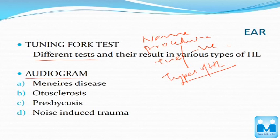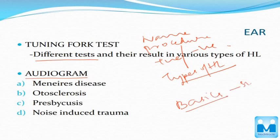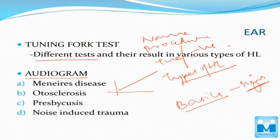Then comes the audiogram. In audiogram, you have to know the basics — what the various signs are and what each sign means. Next, you have to know the audiogram images you can see in various conditions. For example, in Meniere's disease there is low-frequency hearing loss giving an upward slant, and in presbyacusis the slant goes down because high frequency is lost.